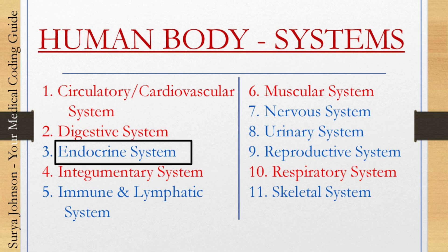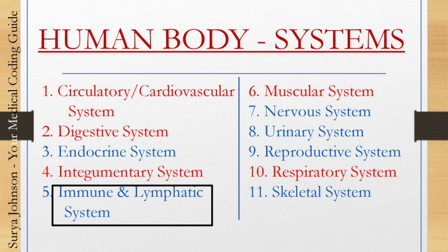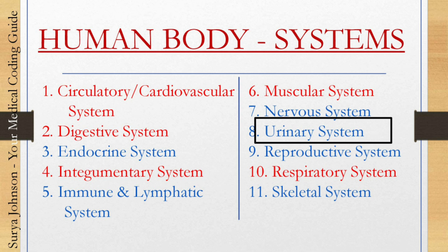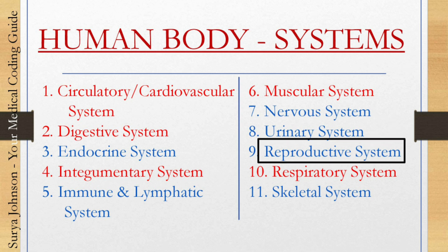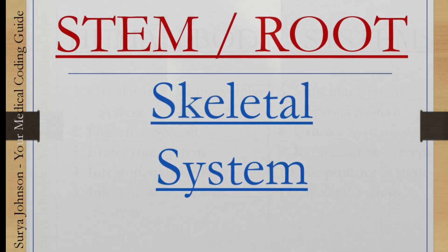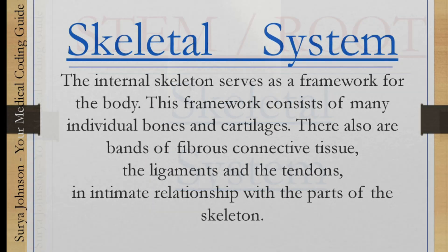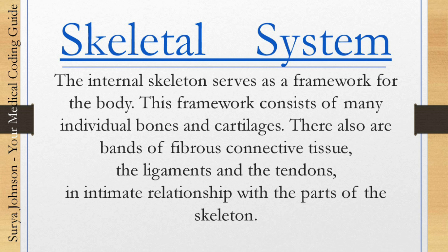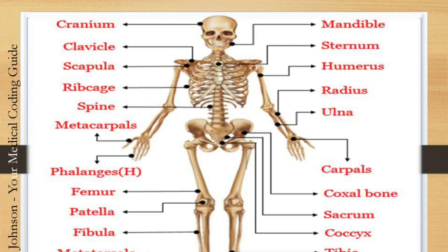The six systems are: the endocrine system, the immune and lymphatic system, the nervous system, urinary system, reproductive system, and the skeletal system. The first one is the skeletal system. The internal skeleton serves as a framework for the body. This framework consists of many individual bones and cartilages. There are also bands of fibrous connective tissue — the ligaments and the tendons — in intimate relationship with the parts of the skeleton. We are looking into the root or stem word pertaining to the skeletal system.